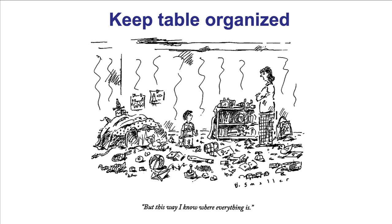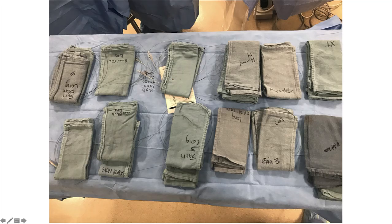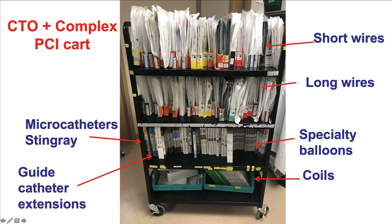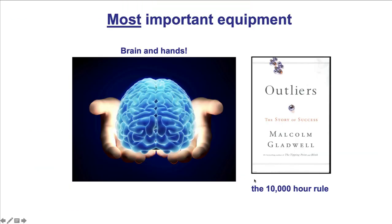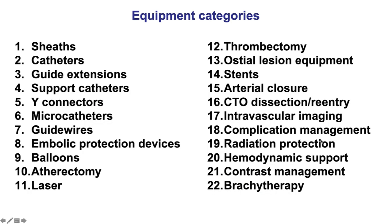This was a long overview of the equipment. It is very important to keep the cath lab table organized — this is an example of a CTO intervention, having the various guide wires used neatly organized so one can find the one that is needed without digging through a pile of equipment. For complex PCI, it is nice to have a card that contains the related equipment such as specialty wires, microcatheters, various specialty balloons, as well as equipment for perforation such as coils and covered stents. But in the end, the most important equipment is the brain — the operator has to be able to understand which equipment works best in every specific scenario, and this takes practice. In summary: 22 equipment categories. Effective use of equipment is critical to ensuring the success and safety of the procedure. Thank you.